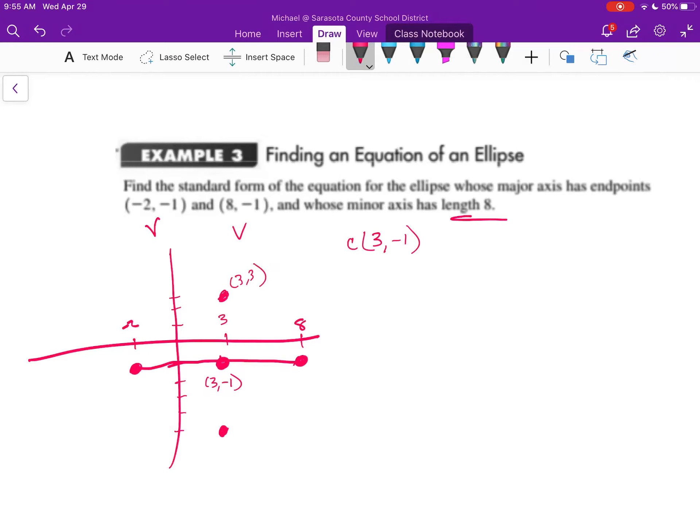And so that means that this point here will be at 3, 3. And this point right here is going to be at 3, negative 5.